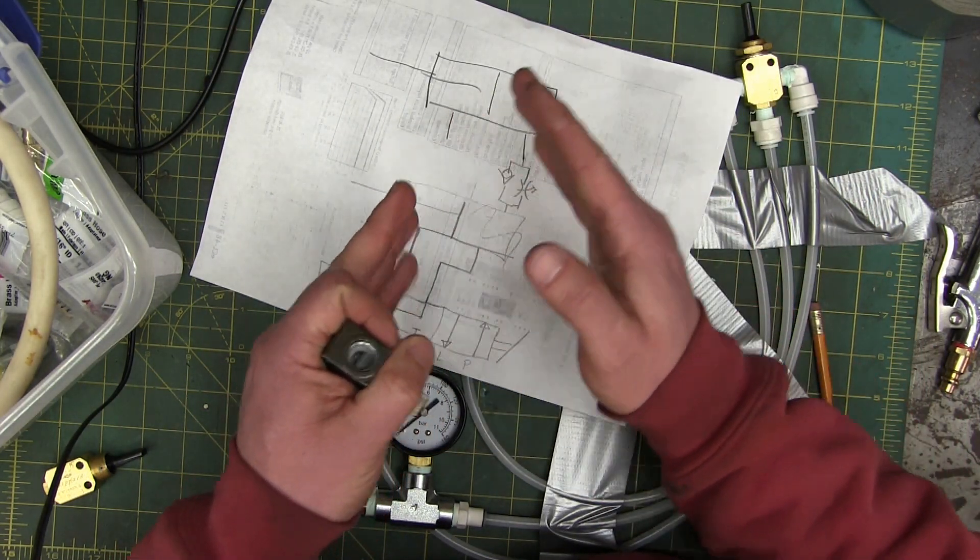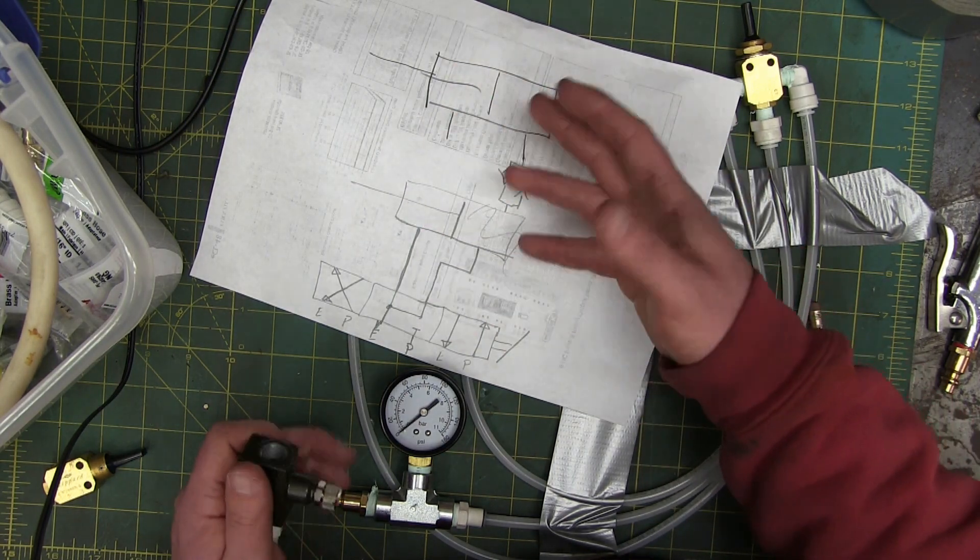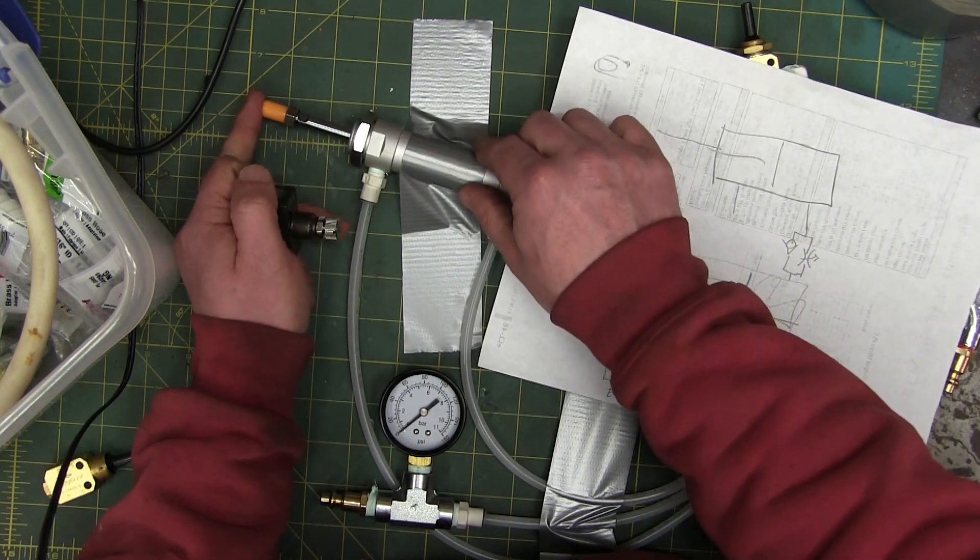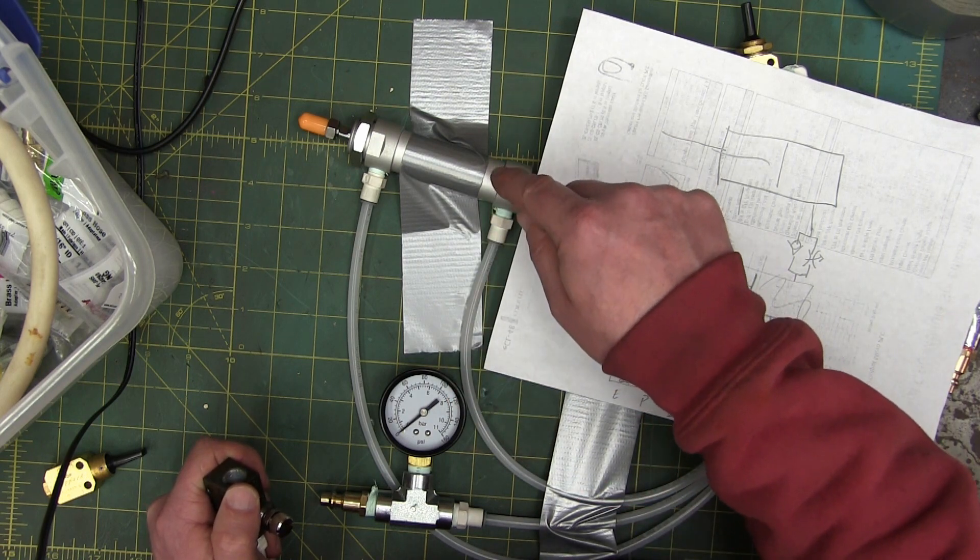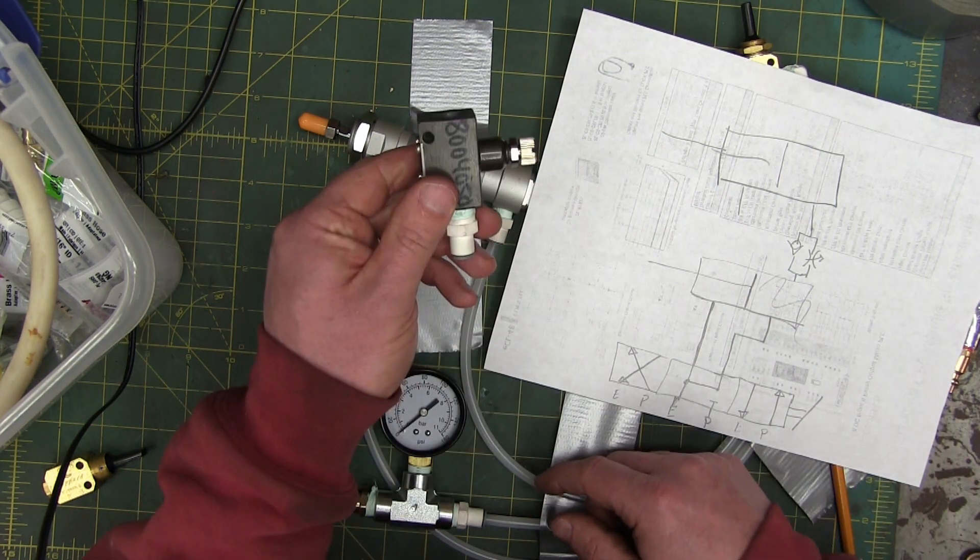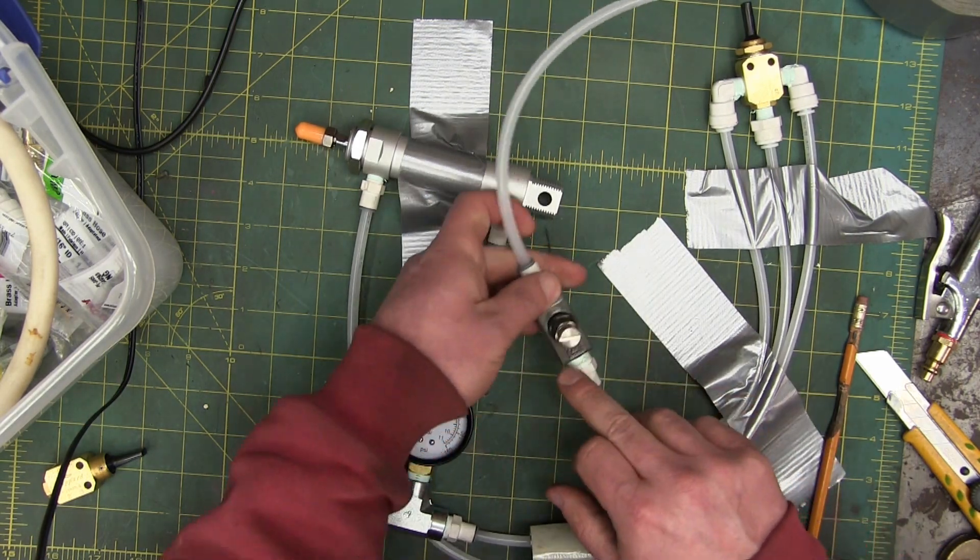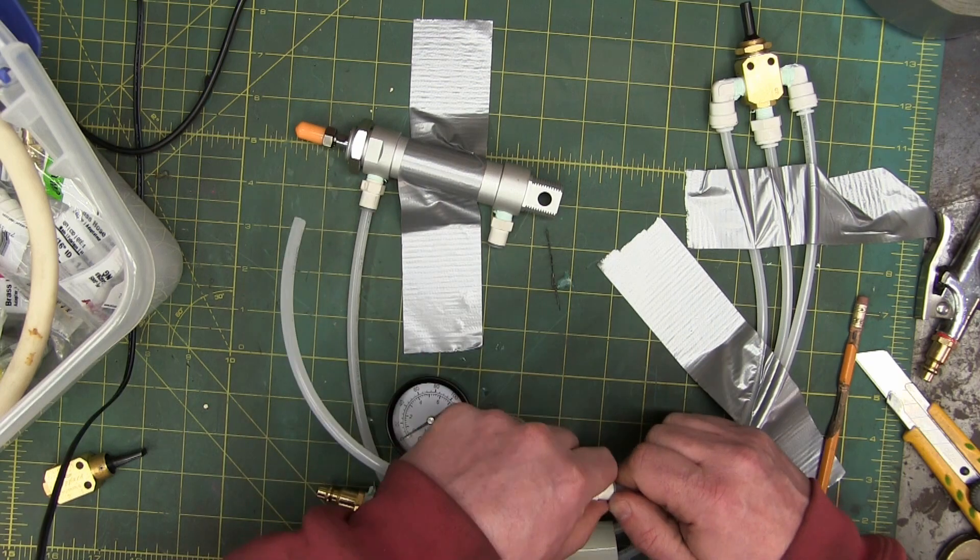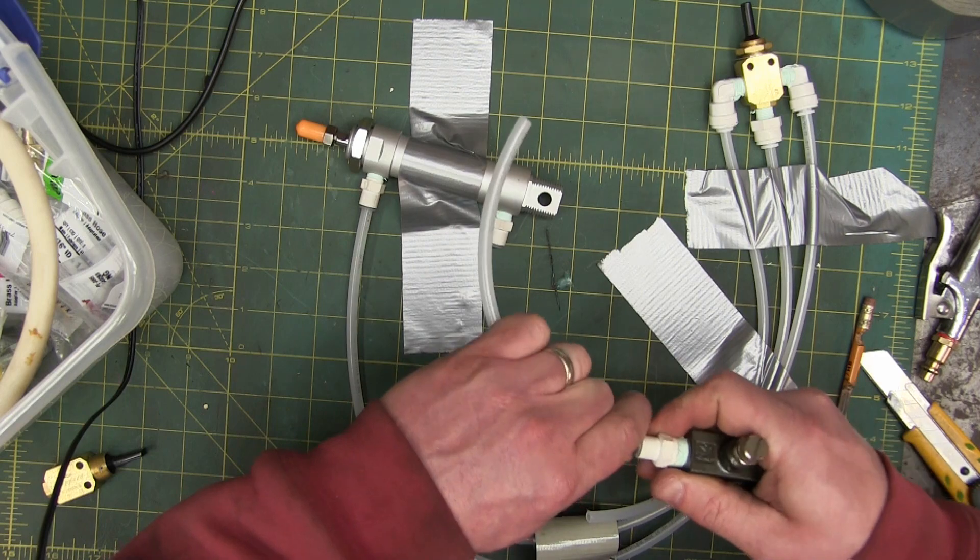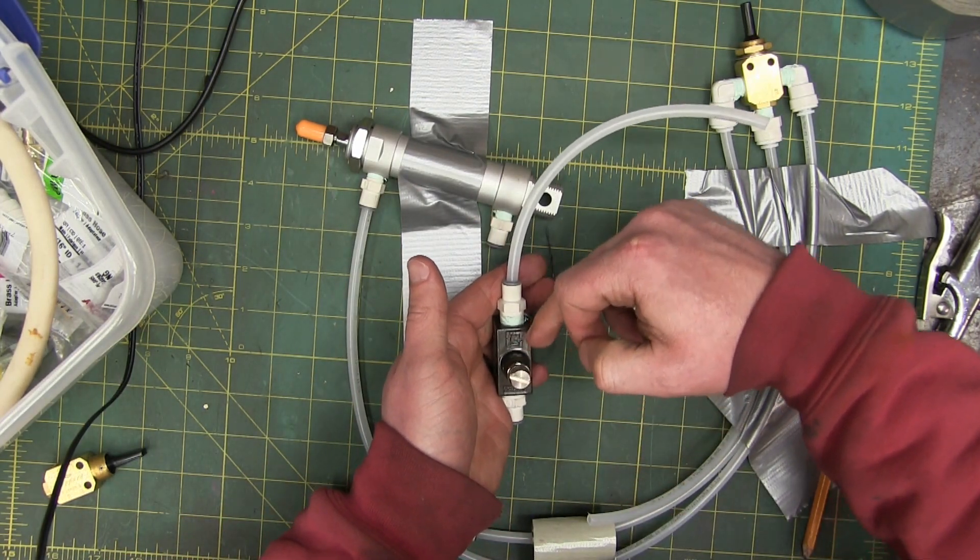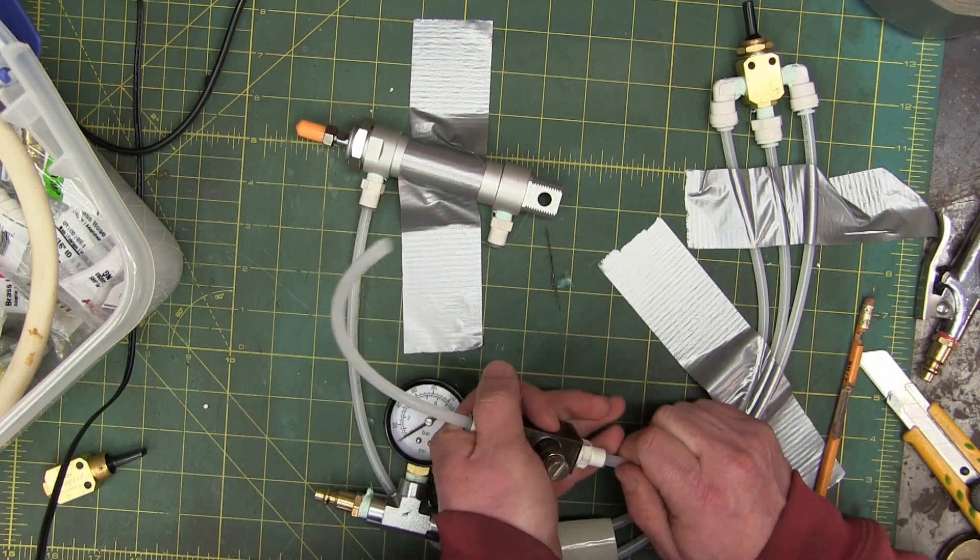But in this case, for nice smooth actuation, we want to throttle the flow out of the reverse side that we're pressurizing. So we want it to come back in slowly. That means we're going to throttle the flow, the exhaust flow, from the back end of this cylinder with the flow control valve. We snap that in in the correct orientation. There's a little diagram on here which shows us where the check ball is and that is the incorrect.